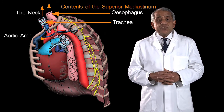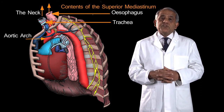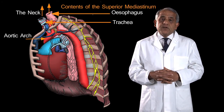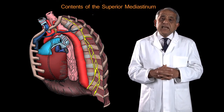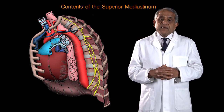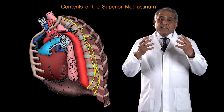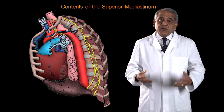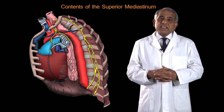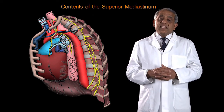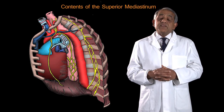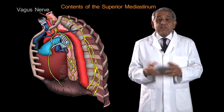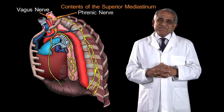In addition to the aortic arch, the trachea and the esophagus, on either side are important nerves that have run down the neck that are now going to cross the superior mediastinum and enter the inferior mediastinum. These are the vagus and phrenic nerves of the two sides.